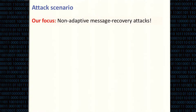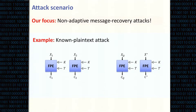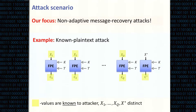We focus on message recovery attacks that are non-adaptive — a very weak form of attack. The weaker the model, the stronger our result. An example is the classical known-plaintext attack: a set of messages x1 to xq plus a target message x* are encrypted under the same key and tweak, and the adversary learns all plaintext-ciphertext pairs except for the target plaintext x*. The goal is to find x*.